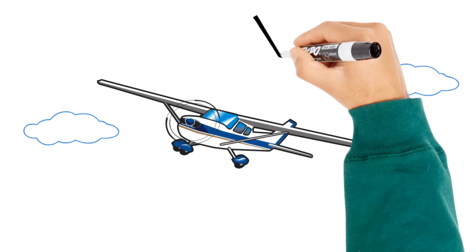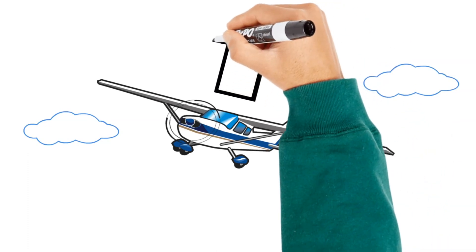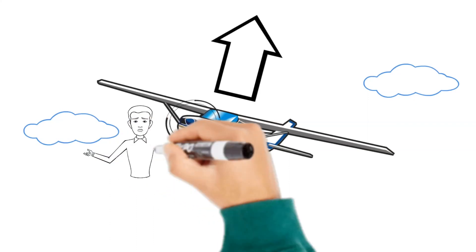If you remember from lesson one, lift is that upward force that opposes weight. So how does the airplane create lift?